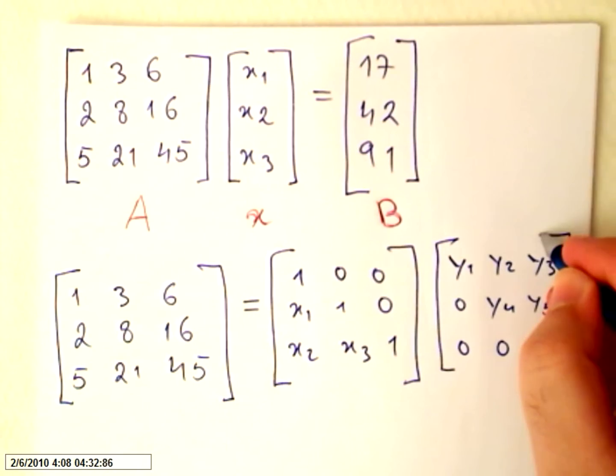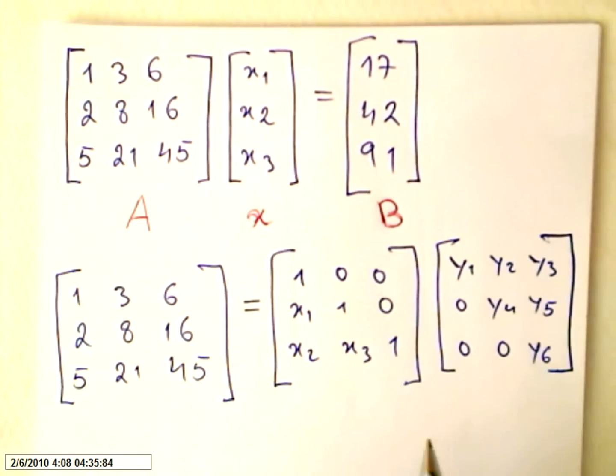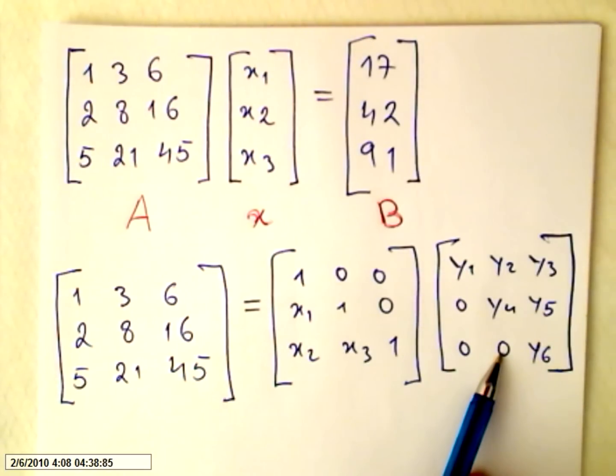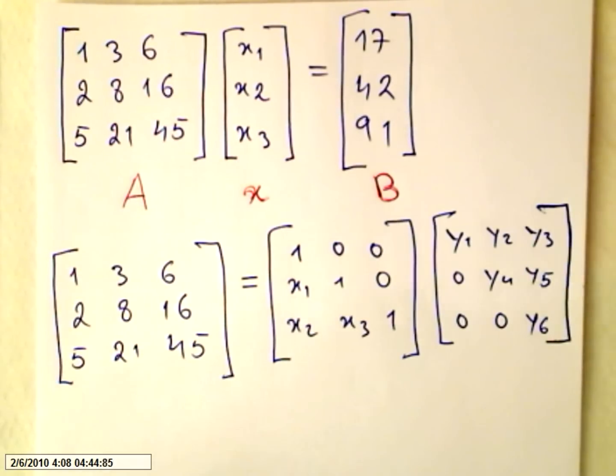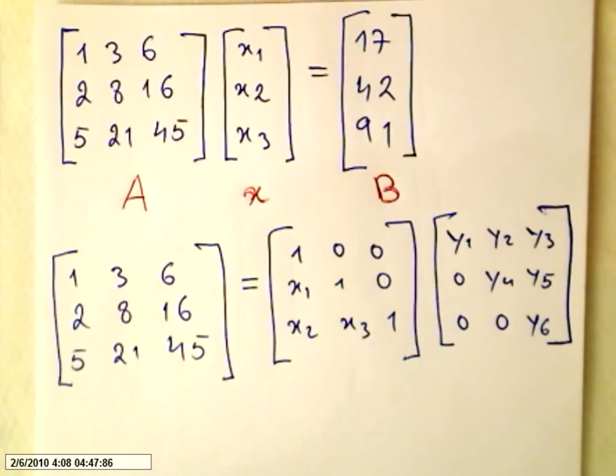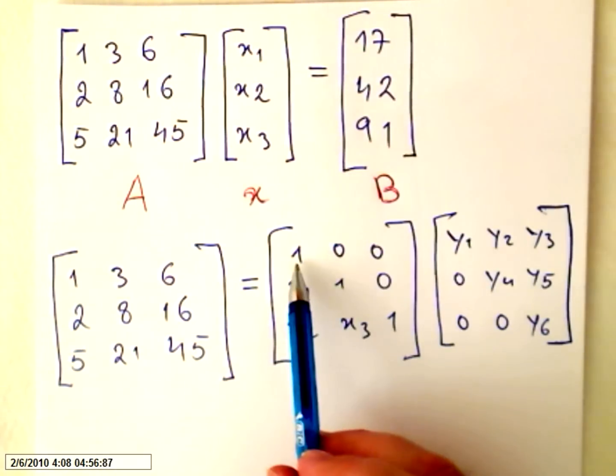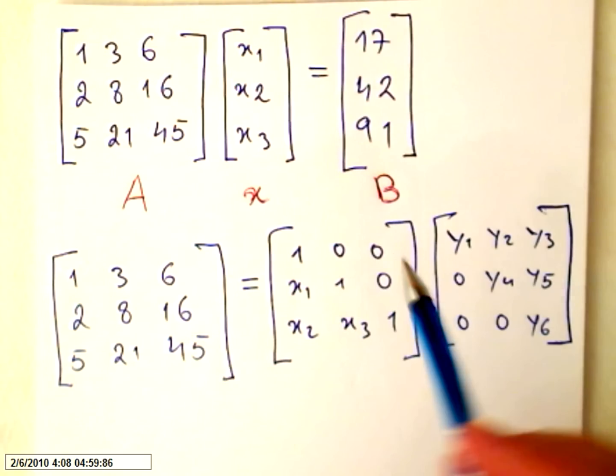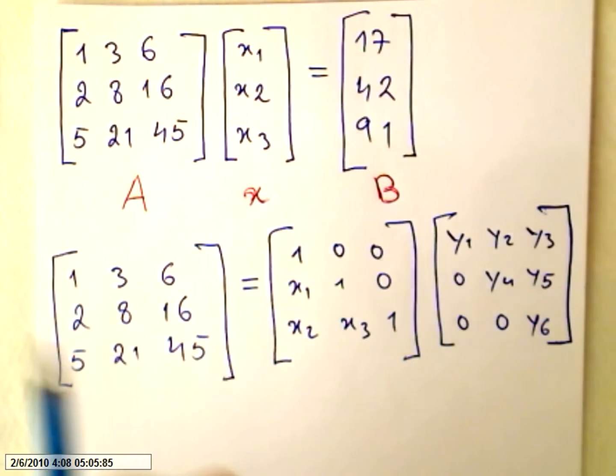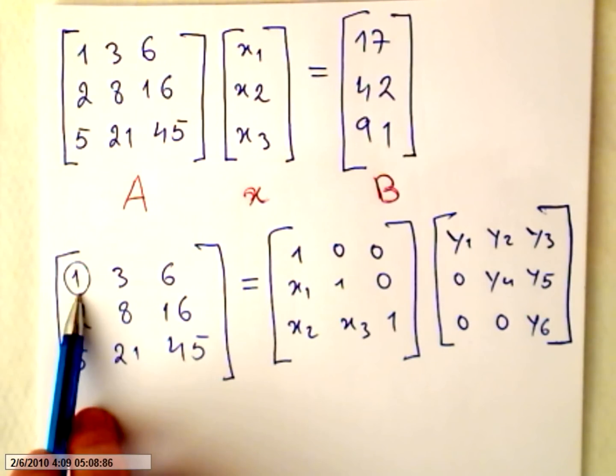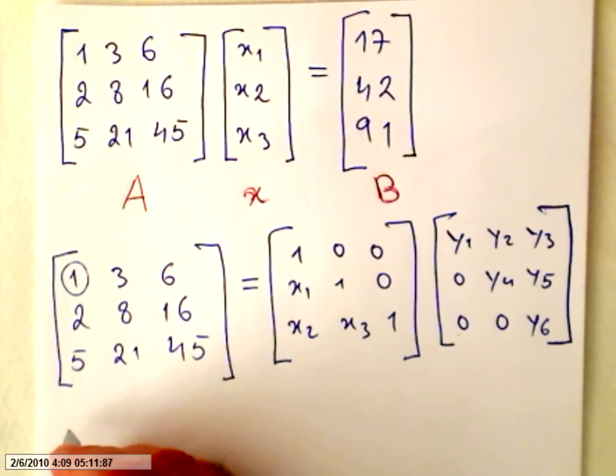I want the product of these two matrices to be this one. I think by this time, my viewers will know how to do this matrix multiplication. So the first line times the first column, so 1 times y1, will equal this number here.